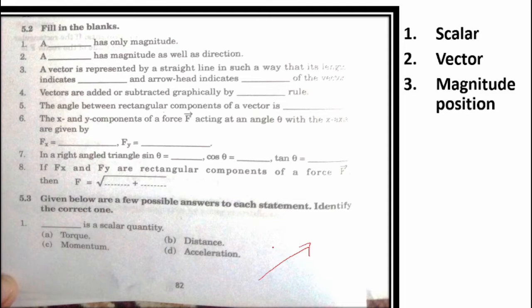Vectors are added and subtracted graphically by dash rule. How can you add and subtract the vectors in the graph? That is by head to tail rule.